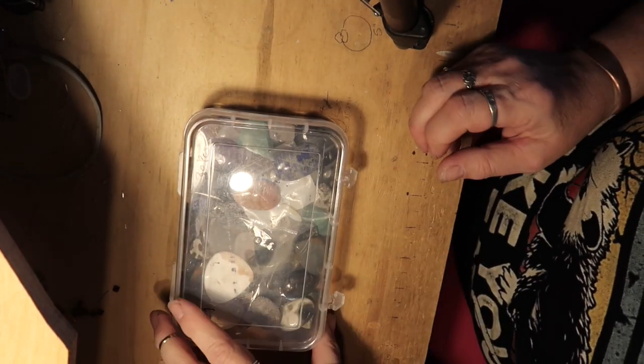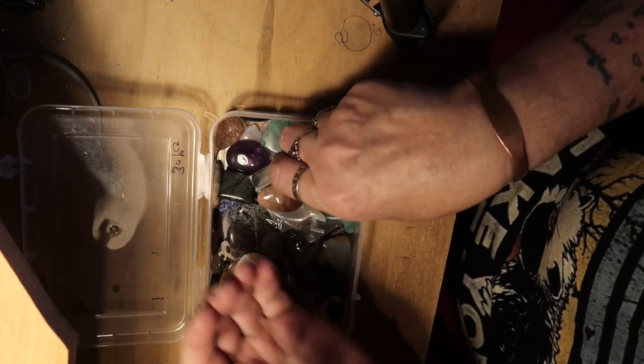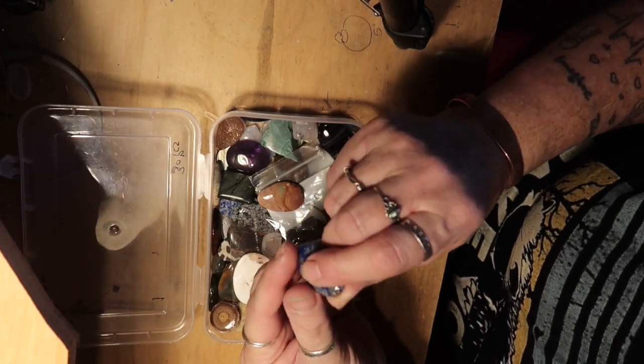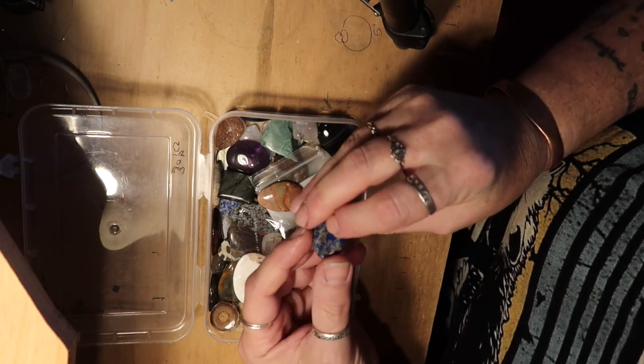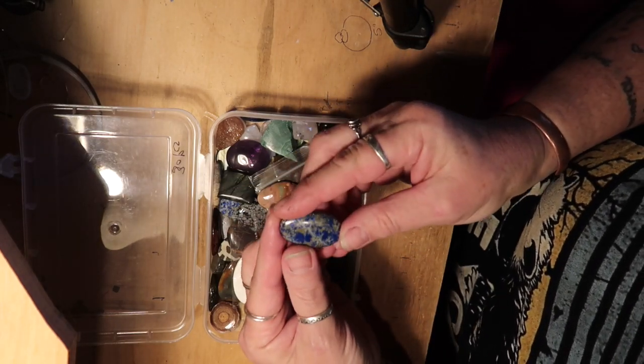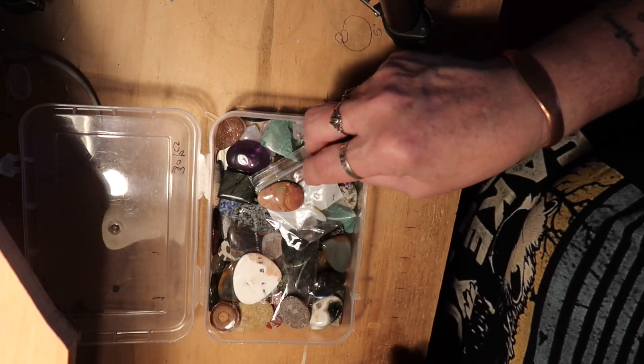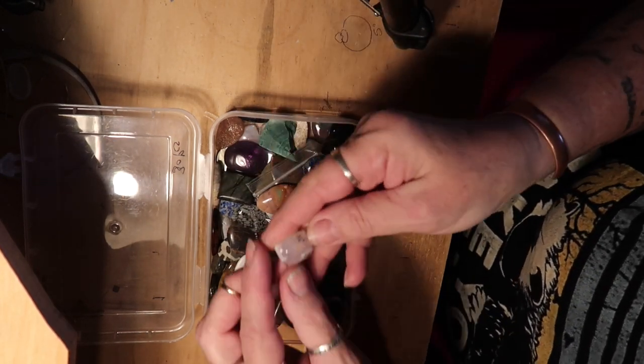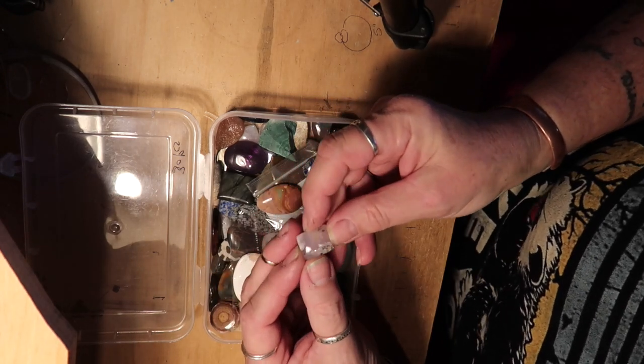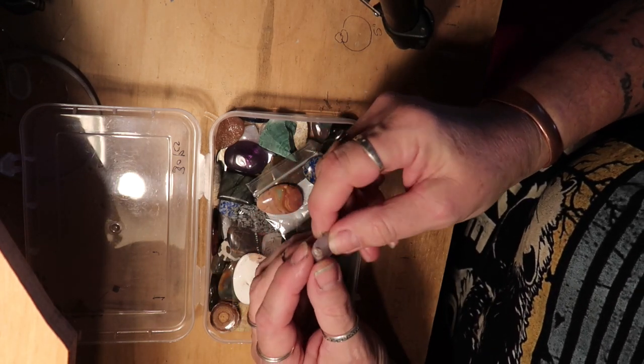And I'm going to need a cab. A cabochon is anything with a domed top that's not faceted and a flat back. So your cabochons don't always have to be an oval. They can be any size. But this is a cabochon, this little square one, because it's got a dome top and a flat back.